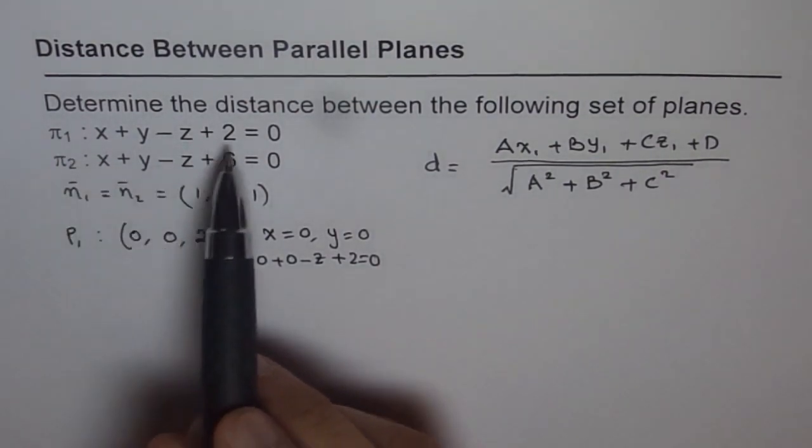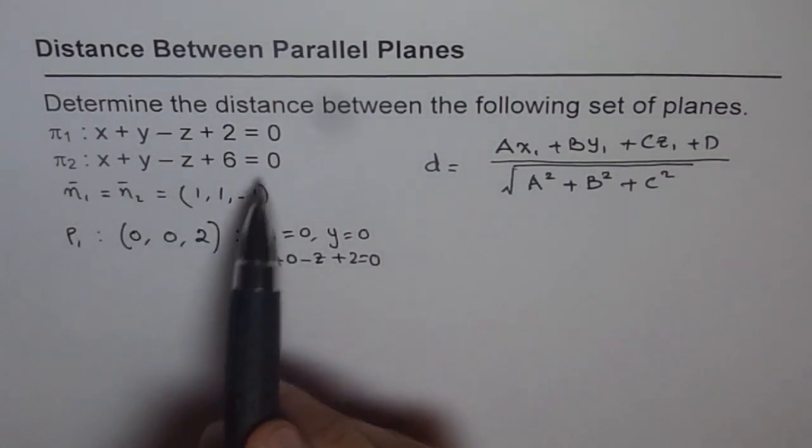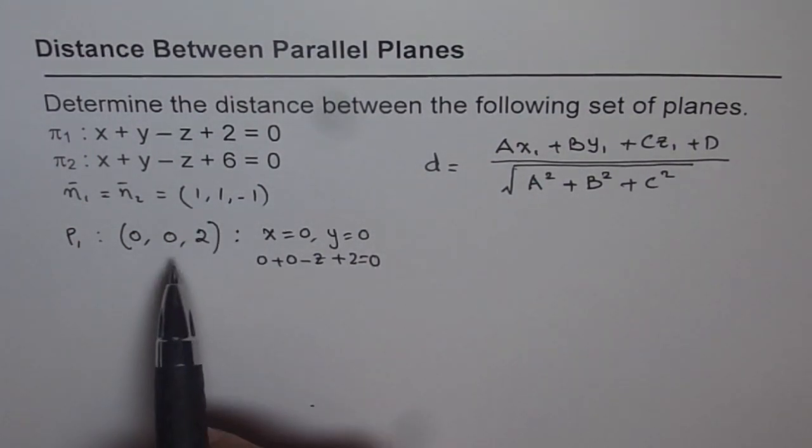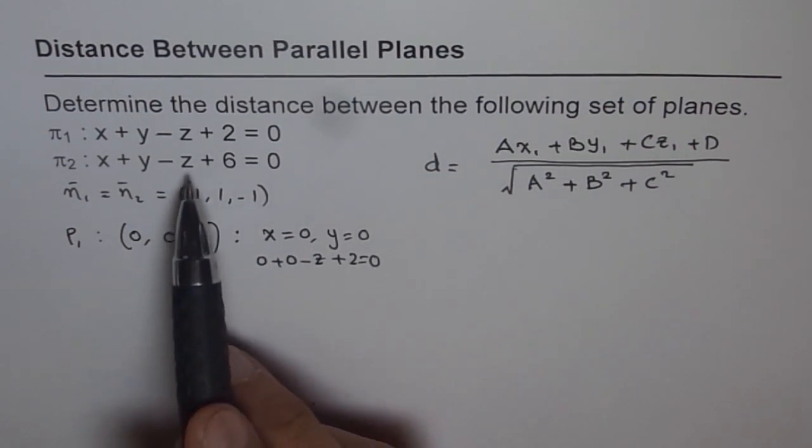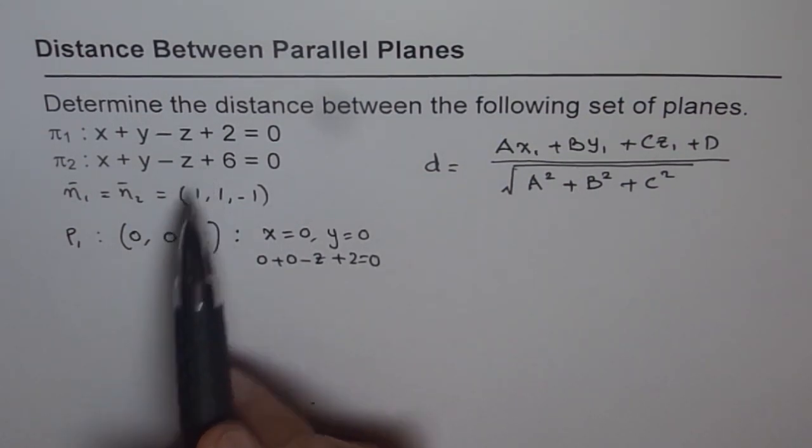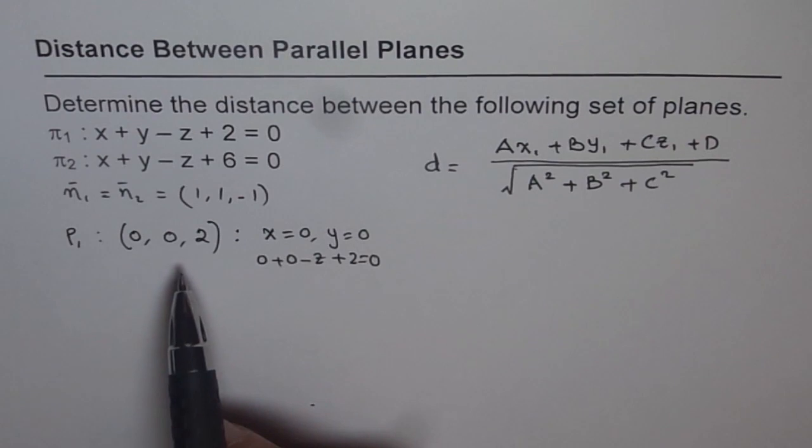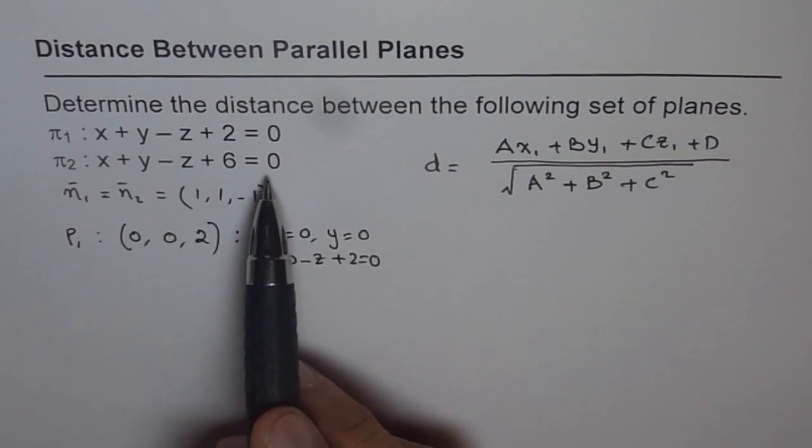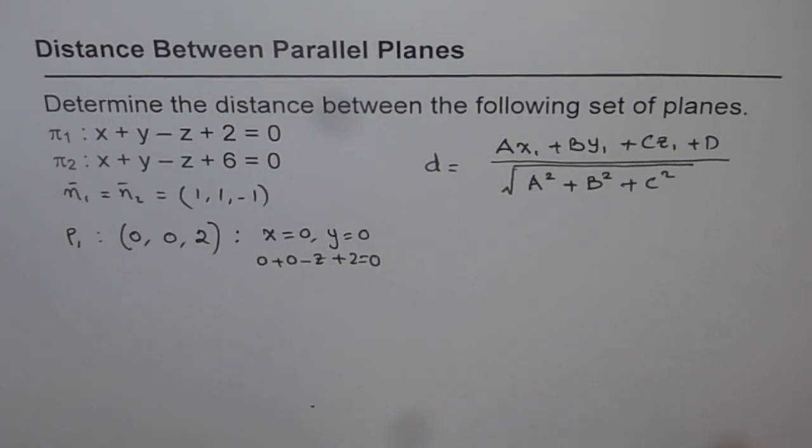Now, we know a point on plane 1, and we have normal of plane 2, which is 1, 1, and minus 1. So we can use this point of plane 1 and find its distance from plane 2. One mistake students sometimes make is they take a point and use that same plane to find the distance. You have to use the other plane, otherwise you'll get 0 distance.